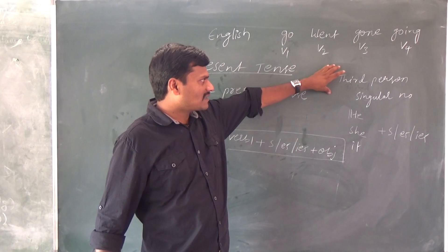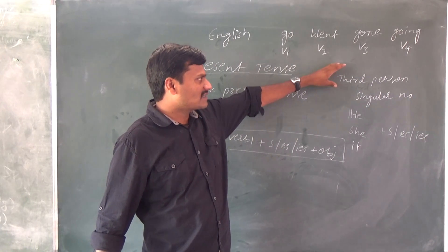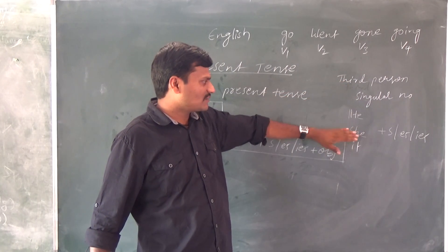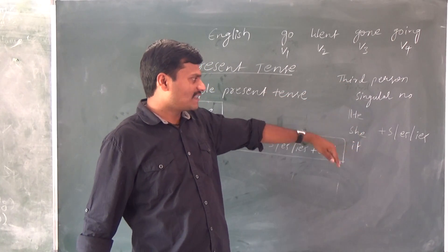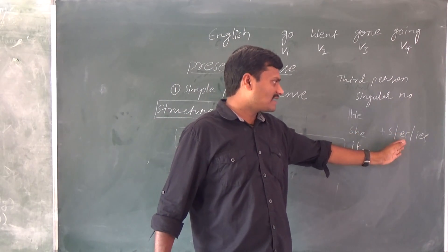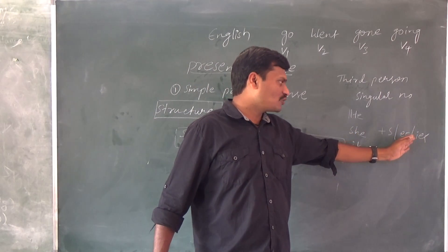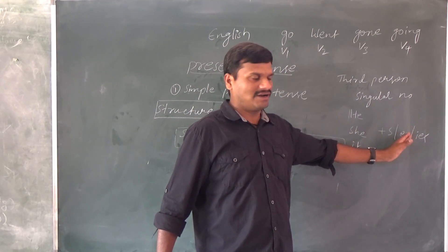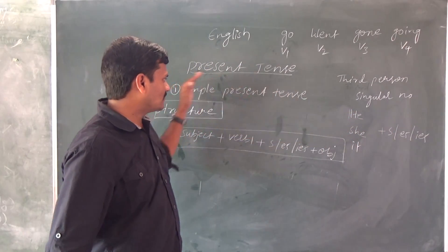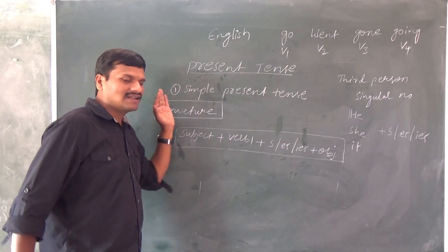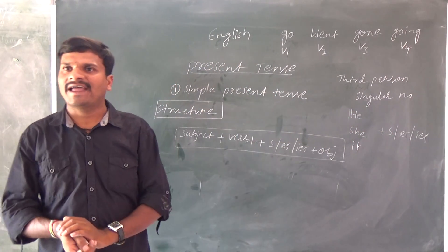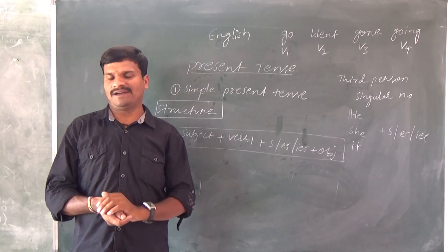In simple present tense, third person singular number — he, she, it, or a name — we add s, es, or ies to verb one. That is our structure. Next we can see exam decoded.